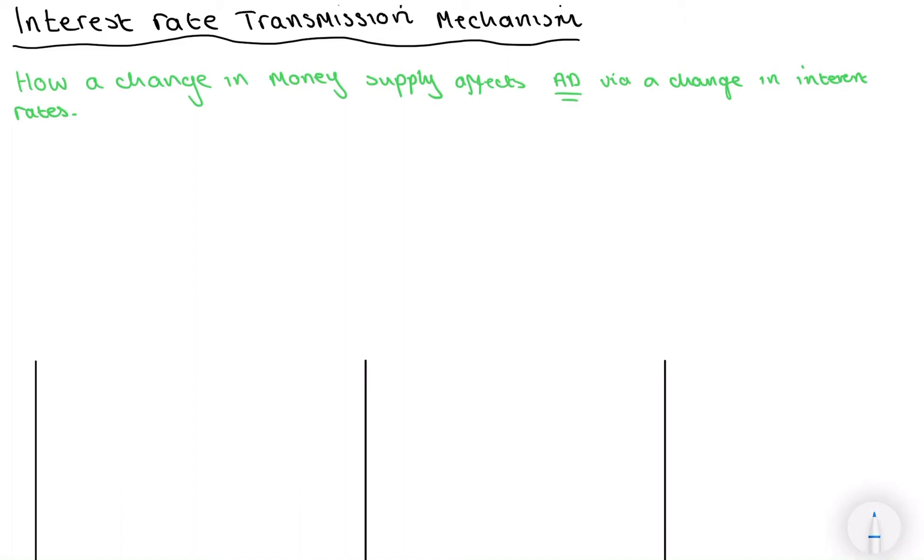So let's just break down this definition. How a change in money supply, and this is changing the money supply and money demand diagram, affects aggregate demand via a change in interest rates.